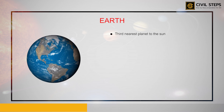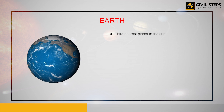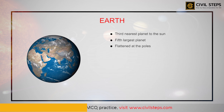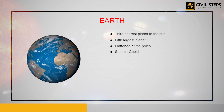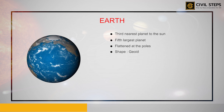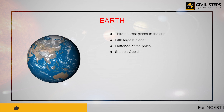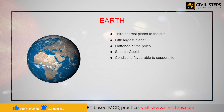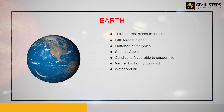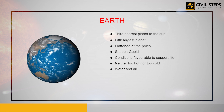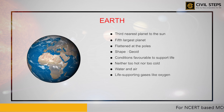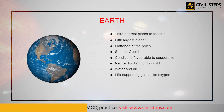Earth is the third nearest planet to the Sun, and in terms of size, it is the fifth largest planet of the solar system. It is slightly flattened at its poles, and that is why its shape is described as a geoid, which means Earth-like shape. Earth is considered a unique planet because it is probably the only planet where conditions are favorable to support life — it is neither too hot nor too cold, has water and air essential for survival, and even has life-supporting gases such as oxygen.